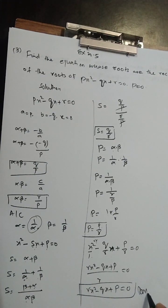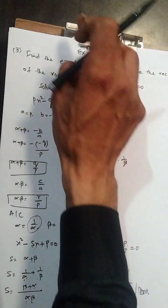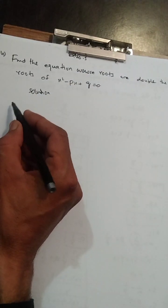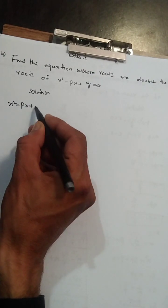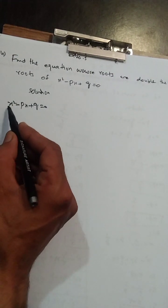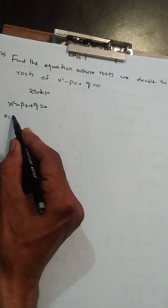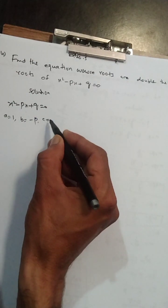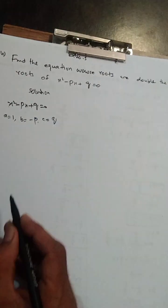Exercise 20.5 ka chautha sawaal hai: find the equation whose roots are double the roots of x² - px + q = 0. Solution: given equation x² - px + q = 0. Same process ke saath solve karenge. Pehle a, b, c ki value banayenge: a = 1, b = -p, c = q.